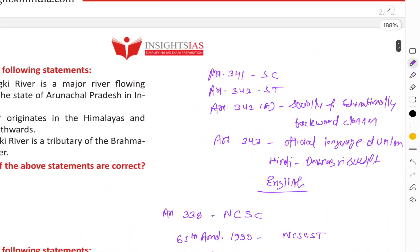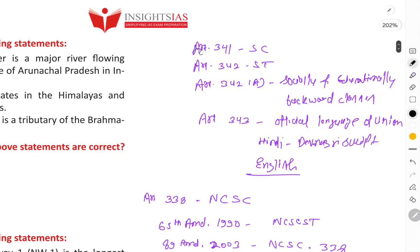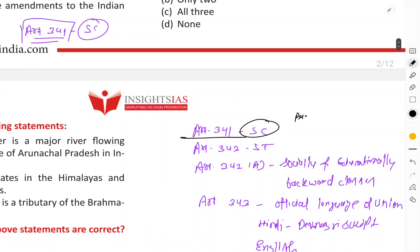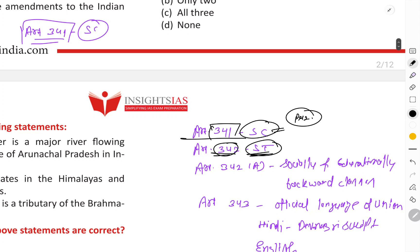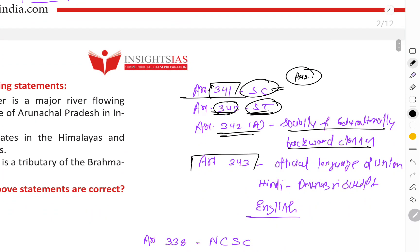Article 341 talks about the notification of Scheduled Castes. The president is the person who notifies the status of the Scheduled Caste — which caste in a given area is the Scheduled Caste or backward class. This is notified by the president, but the initial recommendation and formal process is framed by the Parliament, and recognition is done by the president. Article 341 is for SC, Article 342 is for ST, and Article 342A is for socially and educationally backward classes.